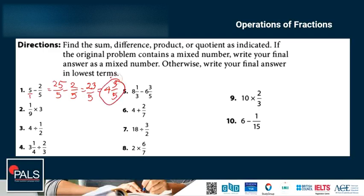Number 2. One third times three ninths. You can cross cancel 3 and 9. Divided by 3 is 1, 9 divided by 3 is 3. Then multiply across. 1 times 1 is 1, 3 times 1 is 3. So the answer is 1 third.